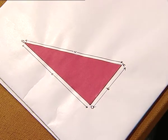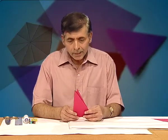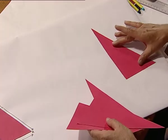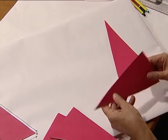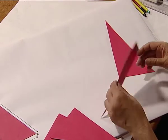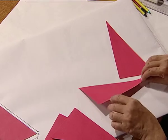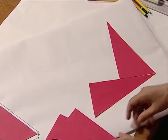With the help of these four replicas, we will make a square where we consider the hypotenuse as the side of the square.